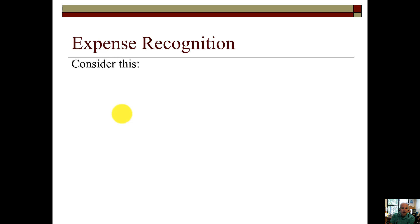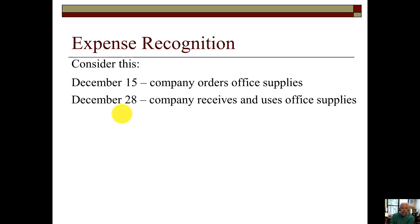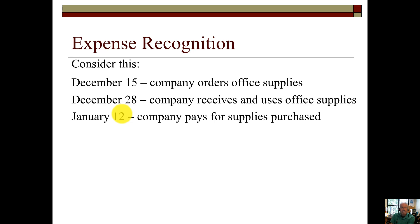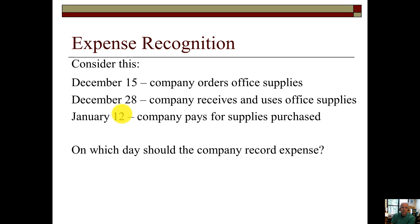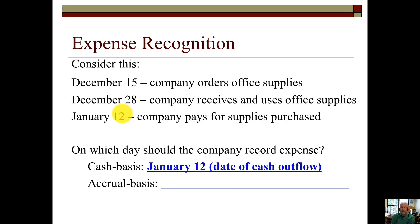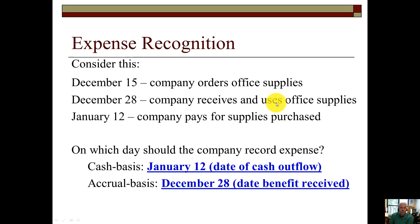For expense recognition, consider this fact: December 15th, the company orders office supplies. December 28th, the company receives and uses — another site word — uses office supplies. And then on January 12th, the company pays for the supplies purchased. The word 'pays' means cash is going down, decreasing. So here we're dealing with what are the accrual-based and cash basis expenses. For cash basis, when would we record the expense for supplies? When it is paid — January 12th, the date of the cash outflow. When is the expense incurred? Remember, go back to Erie — expenses are incurred when they are used up. The site word 'use' — so they use them all on December 28th. So that would be the date the benefit is received, and we will expense it on that date.